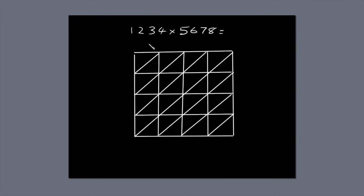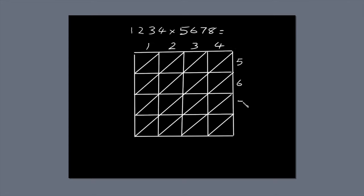Next, write the first number, 1,234, along the top of the box, so each digit lines up with a column. Write 5,678 down the right-hand side of the box, so each digit lines up with a row.